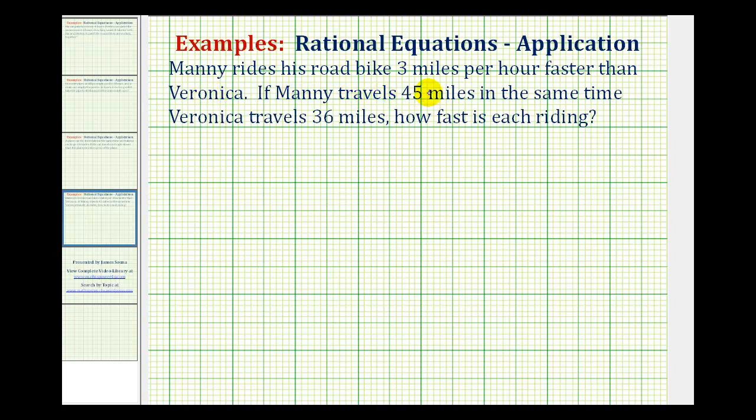Manny rides his road bike three miles per hour faster than Veronica. If Manny travels 45 miles in the same time Veronica travels 36 miles, how fast is each riding?